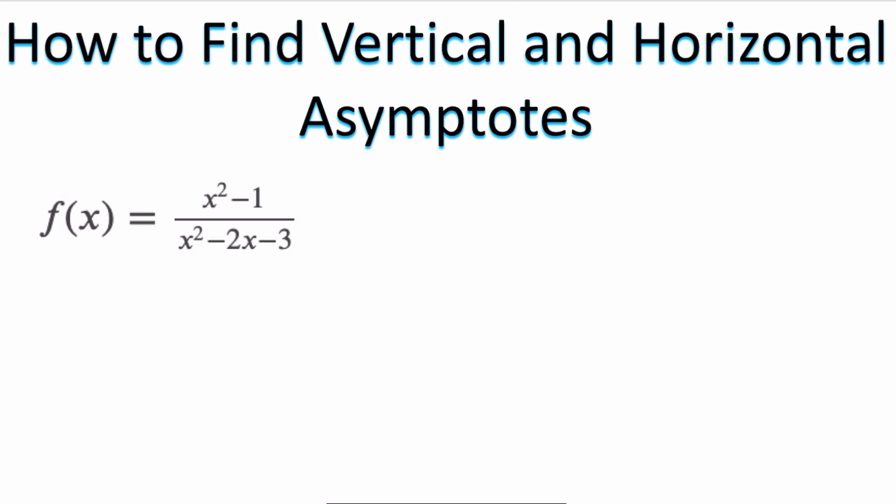In this video, we're going to put it all together. I'm going to give you a four-step plan to success. Step one is that you need to factor both the numerator and the denominator. In the example we're working with, we have f(x) = (x² - 1)/(x² - 2x - 3).